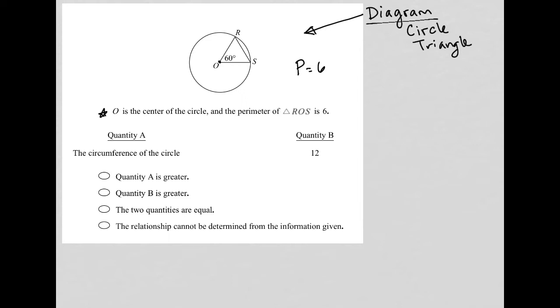So what do we know about this shape that hasn't been given to us? Well, I know, and hopefully you can see as well, that OR and OS are congruent to each other because they're both radii. The distance from the center to the edge of a circle is called a radius. Therefore, OR must be equivalent to OS.